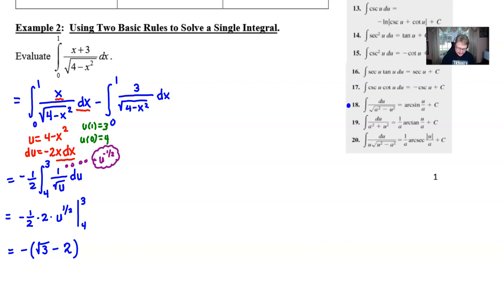Now the right side integral doesn't have nearly as much complexity with it. Because it so closely resembles rule number 18 we are going to dive right into it. All we have to do is identify what a and u are. a is always the square root of this constant. u is always the square root of the x expression which in this case is x to the first. We talk about taking the principal square roots here.